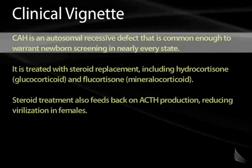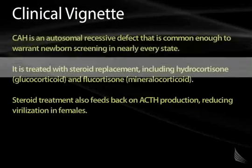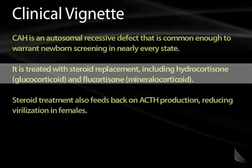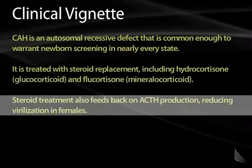CAH is an autosomal recessive defect common enough to warrant newborn screening in nearly every state. It is treated with steroid replacement including hydrocortisone, a glucocorticoid, and fludrocortisone, a mineralocorticoid. This replaces the absent steroids and also feeds back on ACTH production from the pituitary, causing ACTH levels to fall, reducing overproduction of sex steroids and helping to correct the virilization seen.